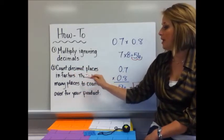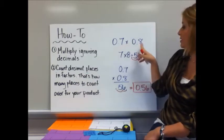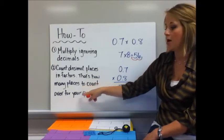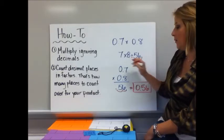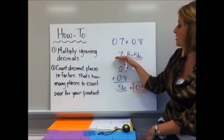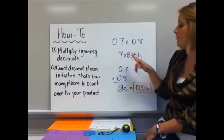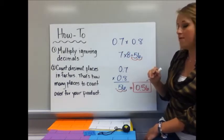Step 2 is where the decimal part comes in. You count the decimal places in the factors. So in my factors, I had one decimal place, 2. That is how many places to count over for your product. So you can see where I've done this in red. The decimal started here because I multiplied ignoring the decimal. 7 times 8 is 56. I had 2 decimal places in my factors. So I move over 1, 2. And so I have 0.56.